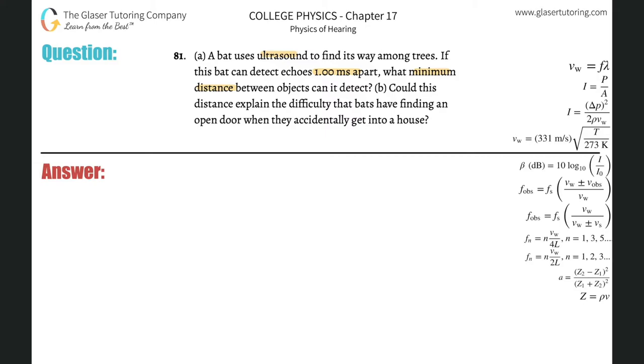Alright, so basically if it's detecting echoes one millisecond apart, remember echoes have two-way travel. They travel to the object, they travel back. So whenever I get this time, I know I have to divide it by two first. So it's one millisecond over two.